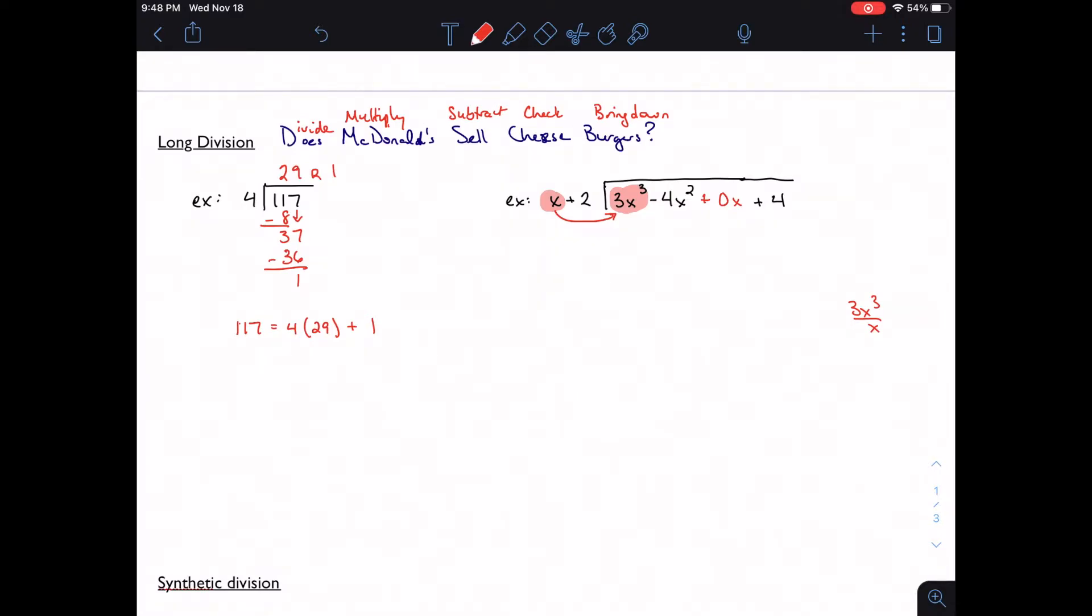Back to the normal work, I'm going to take x into 3x cubed, I'm left with 3x squared, so now I'm going to multiply. Well, 3x squared times x is 3x cubed, 3x squared times 2 is 6x squared.